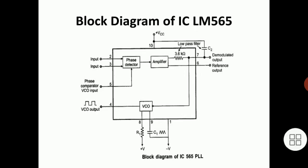The PLL can operate in three modes: free running mode, capture mode, and lock mode. In free running mode, there is no input signal provided to the phase detector — the VCO runs at its own free-running frequency.